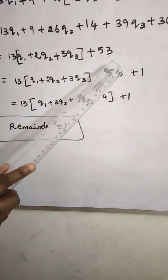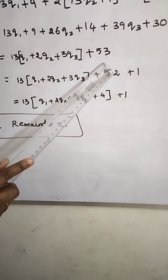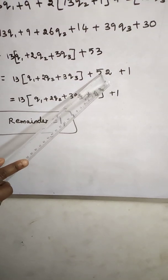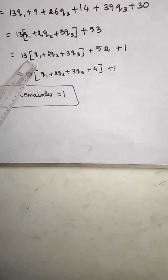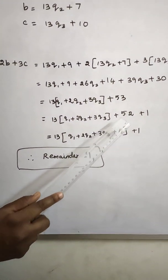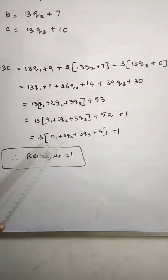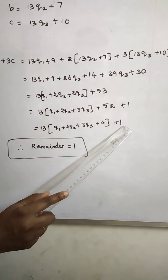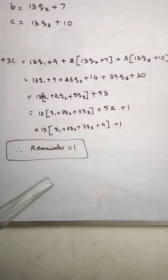The multiple of 13 in the 50s: 13 times 1 is 13, 13 times 2 is 26, 13 times 3 is 39, 13 times 4 is 52. So 52 plus 1 equals 53. We need to multiply this term by 13, so it is a multiple of 13. If we have a multiple of 13, it is divisible by 13. So we have to add a remainder. Therefore, remainder equal to 1.